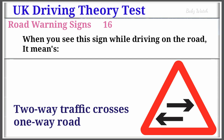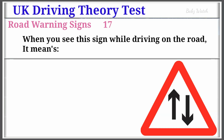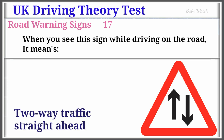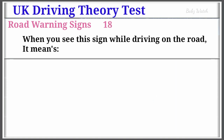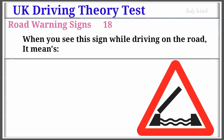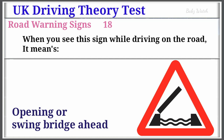UK Driving Theory Test Road Warning Sign Number 17: When you see this sign while driving on the road, it means Two-Way Traffic Straight Ahead. Warning Sign Number 18: When you see this sign while driving on the road, it means Opening or Swing Bridge Ahead.